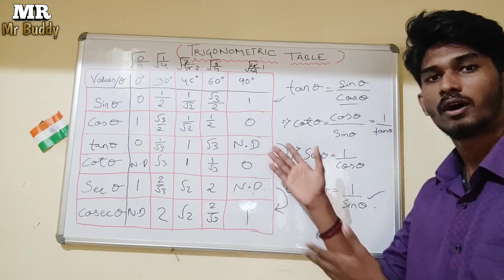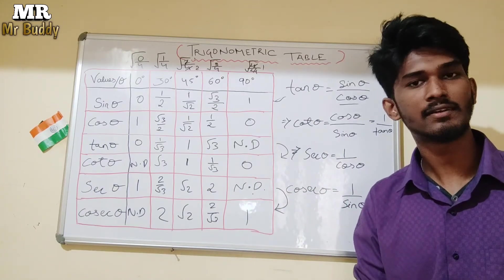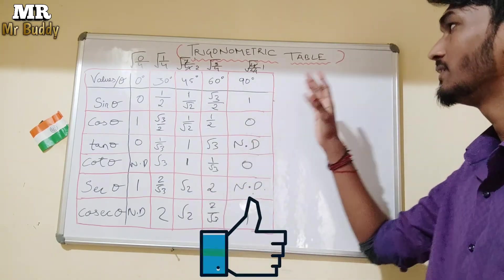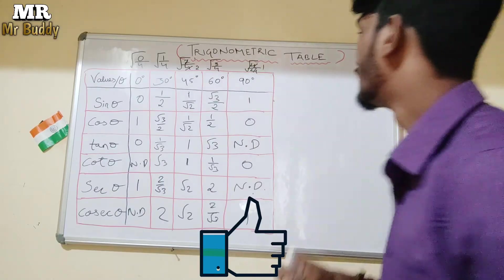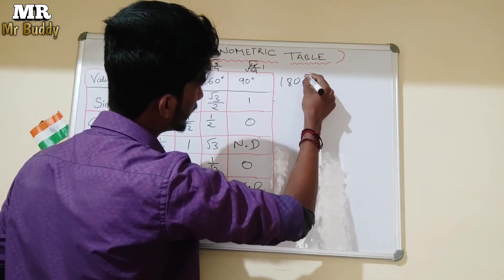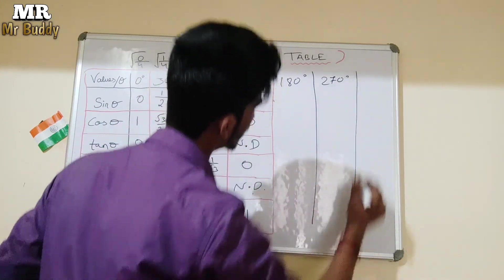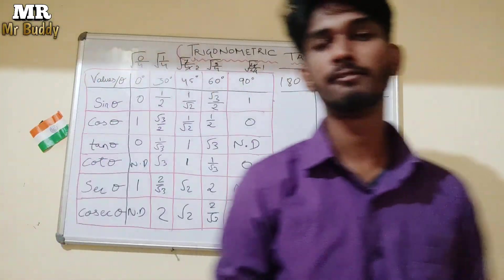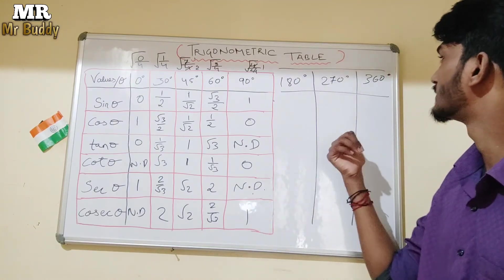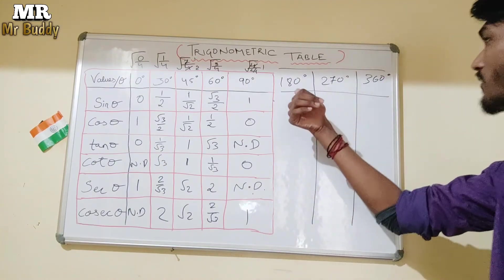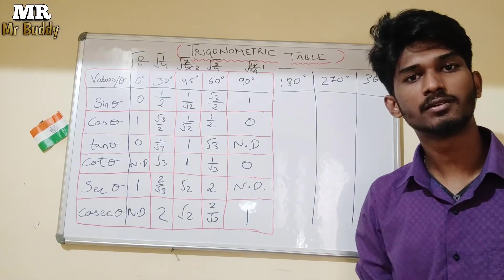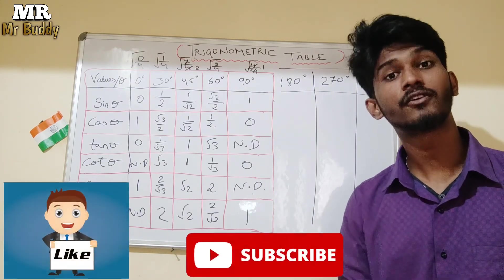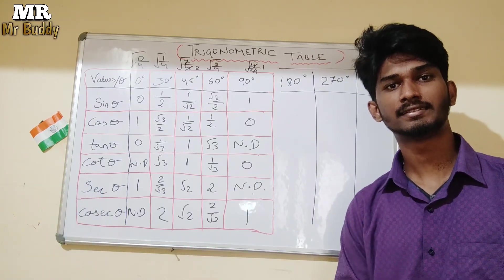Trust me, it will take less than 2 minutes to create this table if you know how to derive the values. Not only 0°, 30°, 45°, 60°, 90° — you can also find values for 180°, 270°, and 360°. Let me know in the comment section and I will make a video on that too. I hope this video gave you a helpful idea — don't forget to like and subscribe the channel!